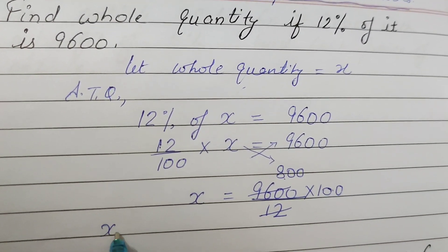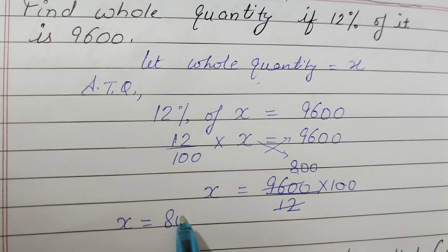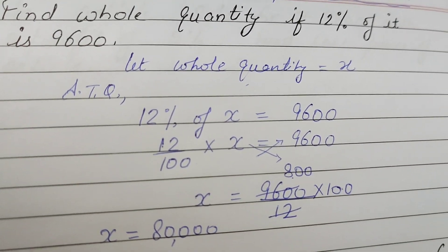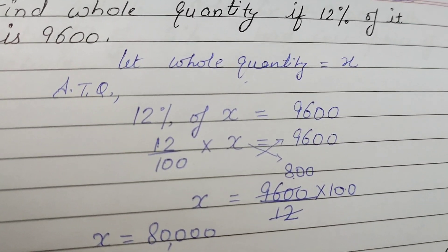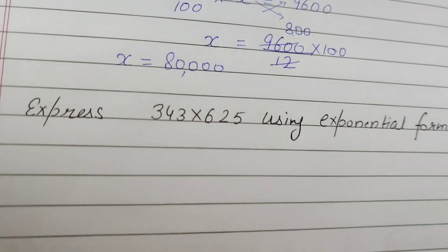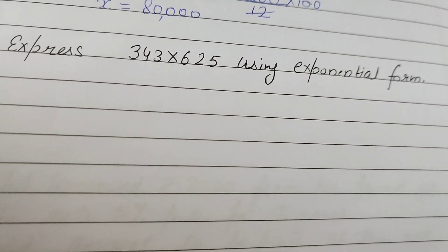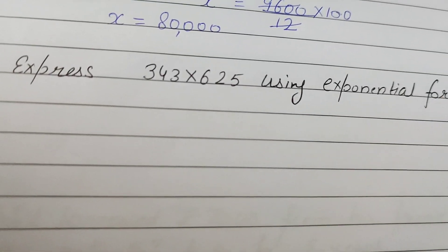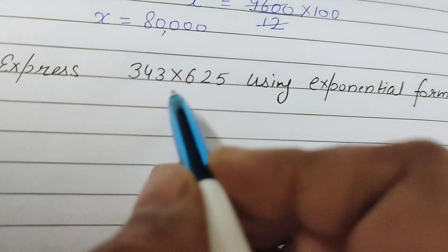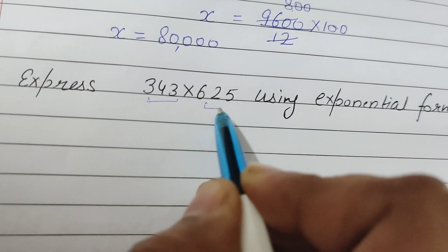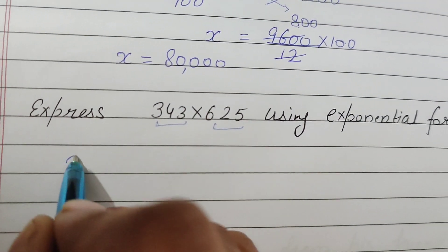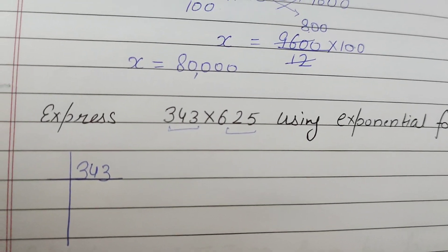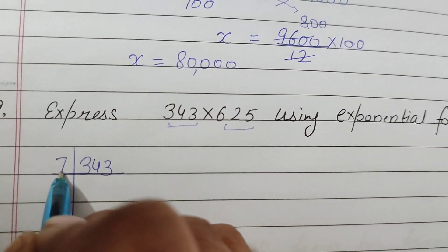Next is express 343 multiply by 625 using exponential form. So first of all we need to solve it out, 343 as well as 625. Let us find its factors. We know 343 is divisible on the table of 7.